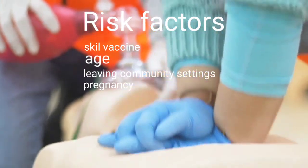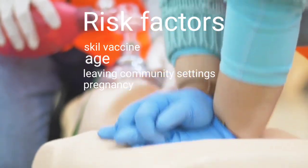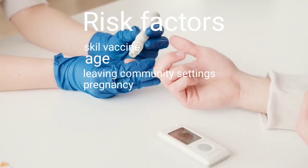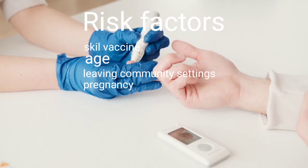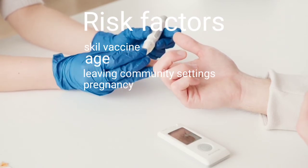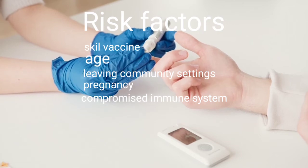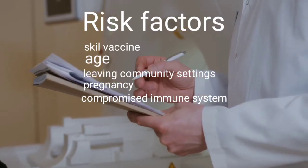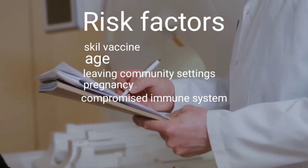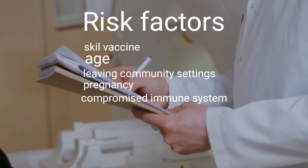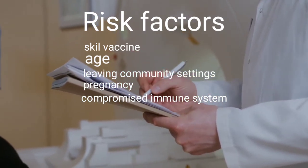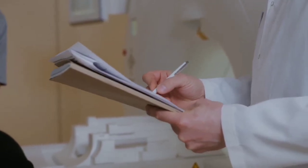Pregnancy increases the risk of contracting listeriosis, an infection caused by Listeria, which may also cause meningitis. If you have listeriosis, your unborn baby is also at risk. A compromised immune system — due to AIDS, alcoholism, diabetes, or use of immunosuppressive drugs — makes you more susceptible to meningitis. Removal of the spleen, an important part of the immune system, may also increase your risk.